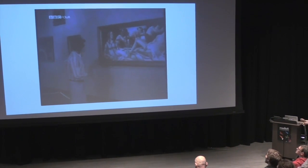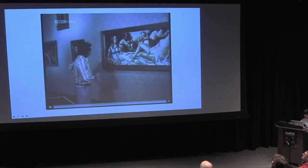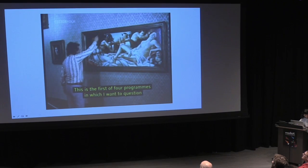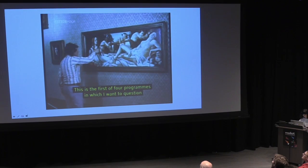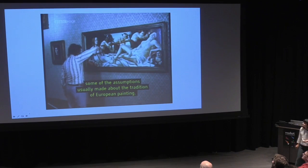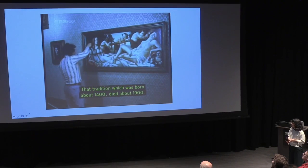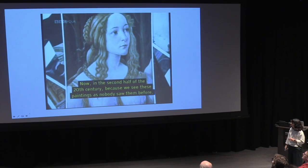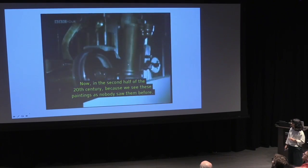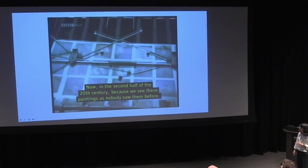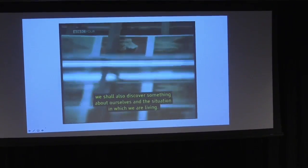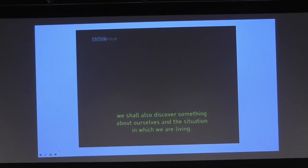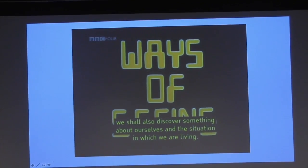I thought I stopped in the right place. Let's see if it... This is the first of four programs in which I want to question some of the assumptions usually made about the tradition of European painting. That tradition which was born about 1400 died about 1900. Tonight, it isn't so much the paintings themselves, which I want to consider, as the way we now see them, now in the second half of the 20th century. Because we see these paintings as nobody saw them before. I tried to skip this part, but we get to experience it together.